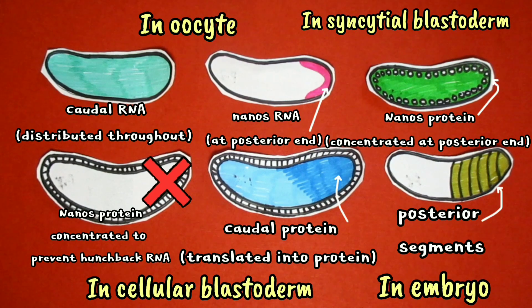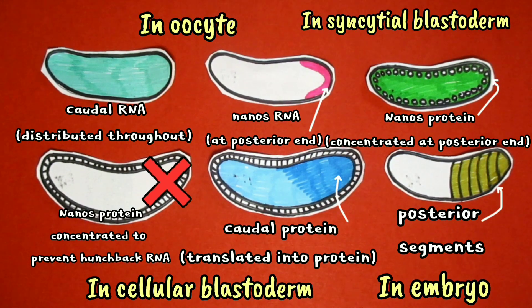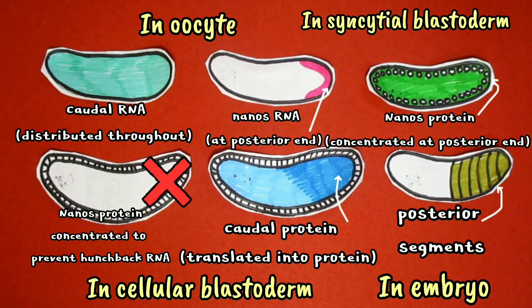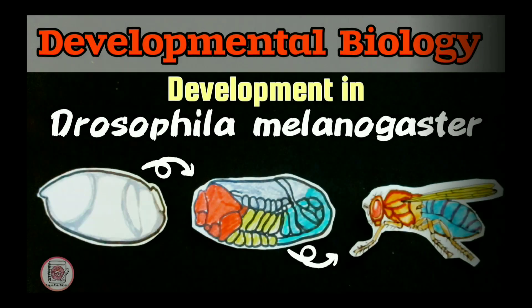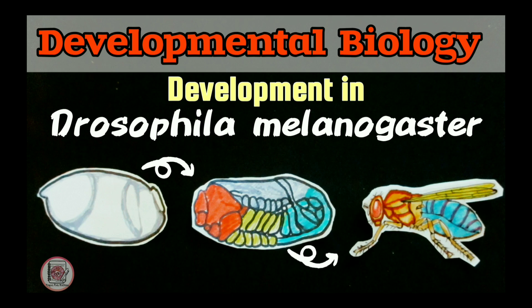Wherever hunchback protein is synthesized, the embryo develops anterior structures. Bicoid and nanos proteins are examples of morphogens — substances that control developmental events in a concentration-dependent manner. The concentration gradients of these two morphogens are the reverse of each other: where bicoid protein is abundant, nanos protein is scarce, and vice versa. Thus in Drosophila, the anterior-posterior axis is defined by high concentrations of these morphogens at opposite ends of the early embryo.